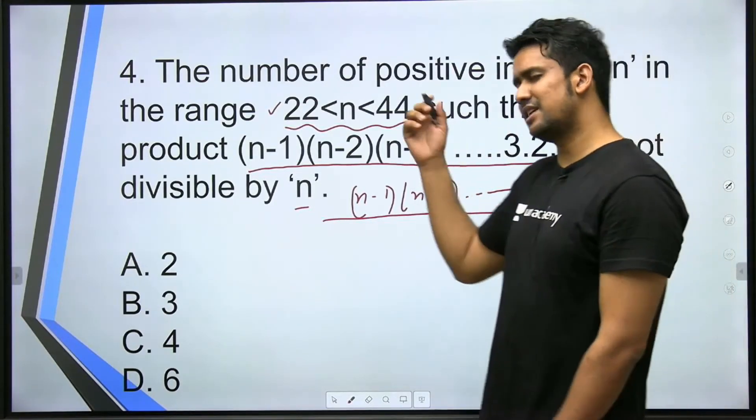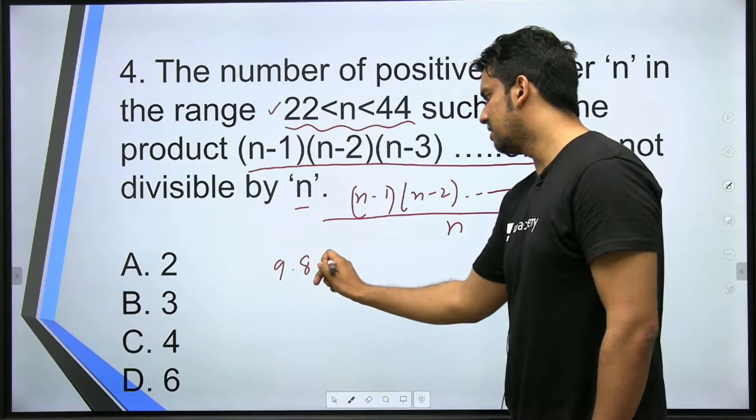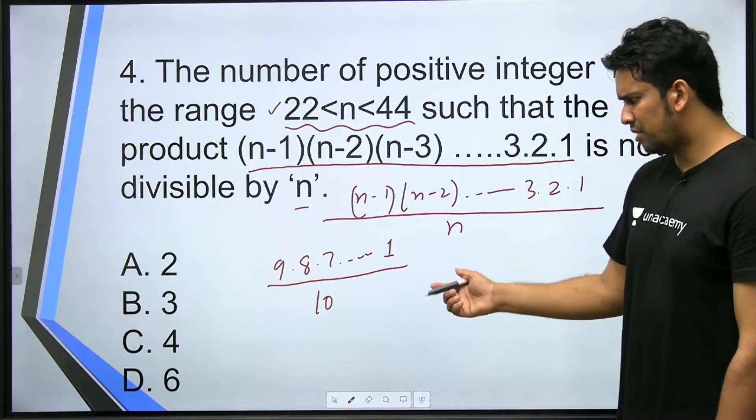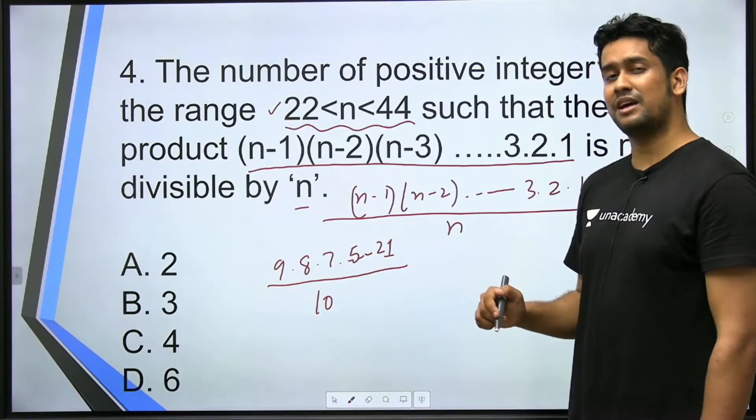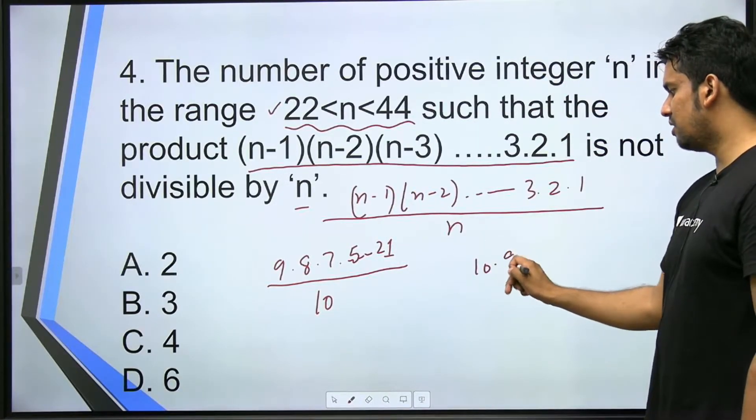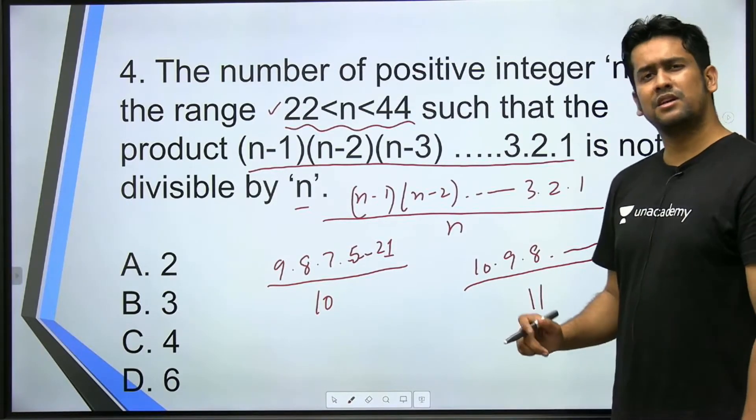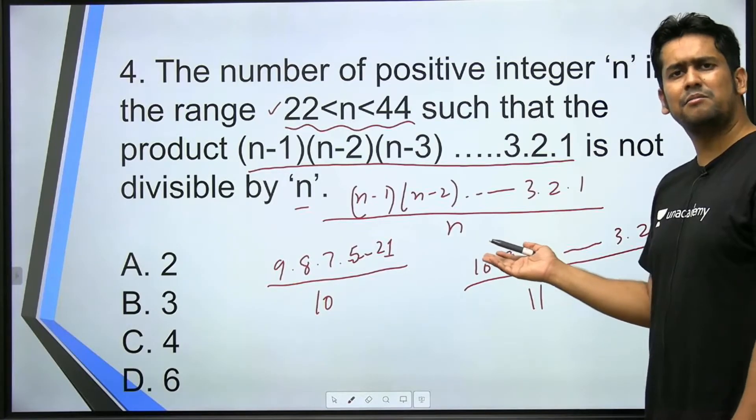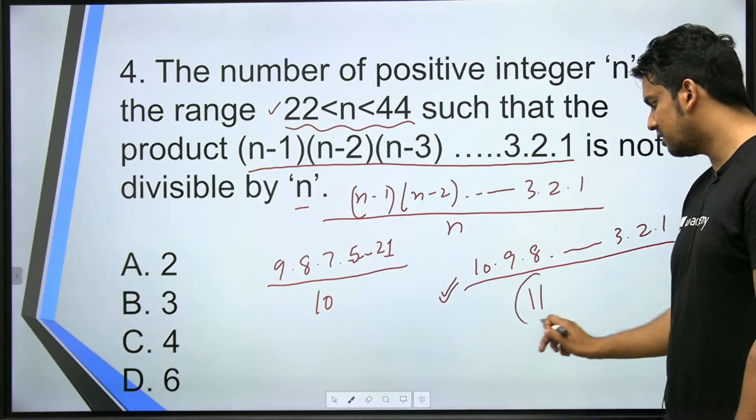Let's take an example, let's suppose n's value is 10. So if n's value is 10, what will this become? n minus 1 will be 9, 8, 7 and continuing down to 1, divided by 10. Is this divisible? Absolutely yes, because here in between there will be 5 somewhere, in between there will be 2 somewhere. So this will cancel, meaning it's divisible. Similarly, let's say n's value is 11. So this number will be 10 into 9 into 8 and so on up to 3, 2, 1 divided by 11.